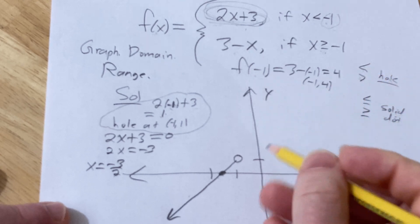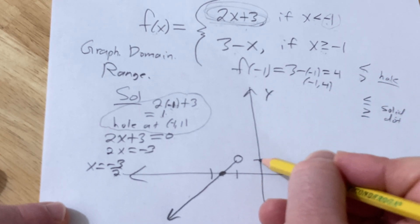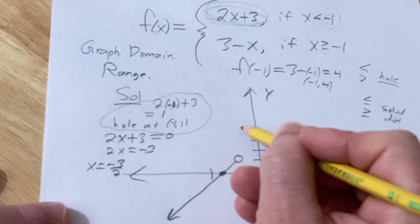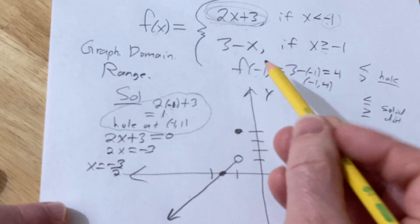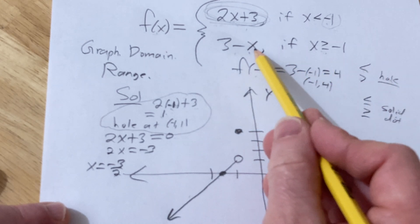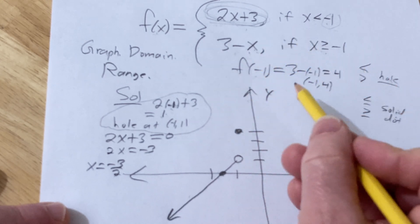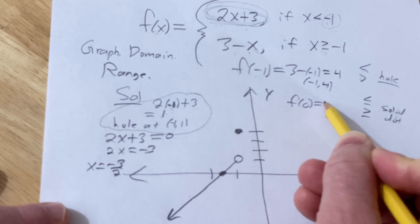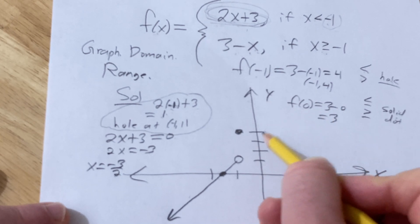So negative 1 comma 4 is going to be our point. So at negative 1, we go up 4, 1, 2, 3, 4, put a dot. This has a negative slope, so we need to figure out where it crosses, right? So it's going to be going down. So to find the y-intercept, we can plug in 0. So we get 3, so it's going to cross here.